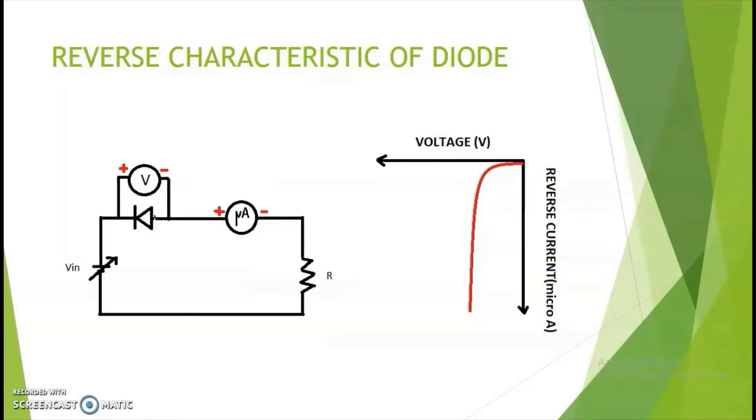Next, to get the reverse characteristic of a diode, the setup is similar to that of a forward bias diode. The only difference here is that the diode is placed in a reverse manner. Also, we have a microammeter instead of a milliammeter because the reverse current is very small. A digital multimeter could also be used.